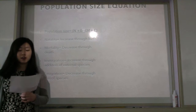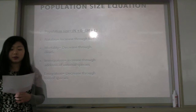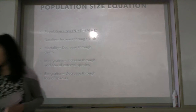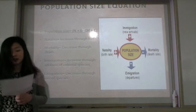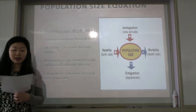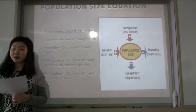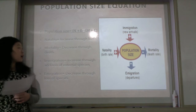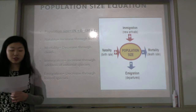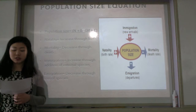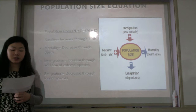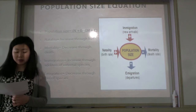Before explaining the curve itself, I'll first clarify some vocabulary terms. The following equation is how population sizes are calculated: natality plus immigration minus mortality plus emigration equals size. Natality refers to increase in population size through births. Oppositely, mortality refers to decreases of population due to deaths. Immigration refers to increases in population size through the addition of external species, while emigration refers to decreases in population size due to loss of species to external populations.